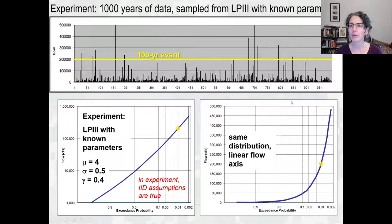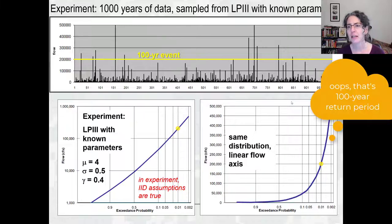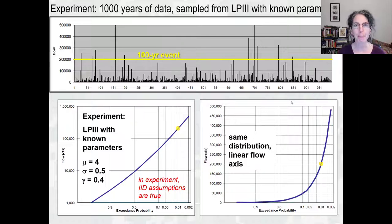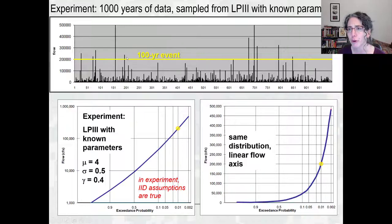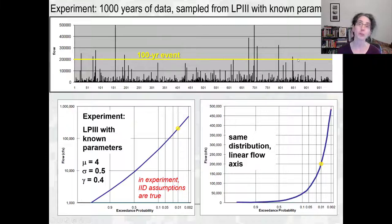In 1,000 years, the 1% flow should be equaled or exceeded about 10 times. And we see 1, 2, 3, 4, 5, 6, 7, 8, 9, 10, 11 — so a little bit over, but about right. Here is our 500-year flow at about 450,000, and it's exceeded twice in 1,000 years, so that looks about right.